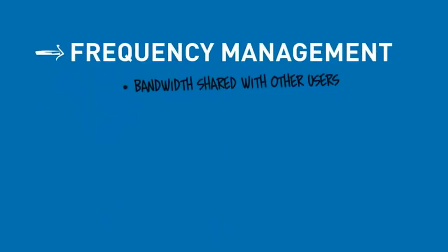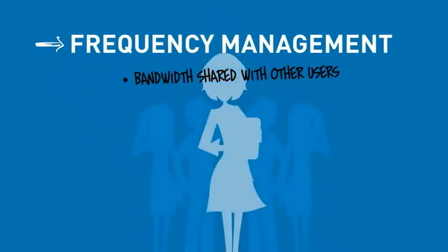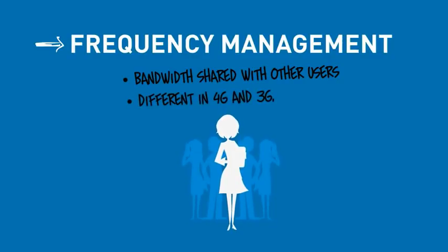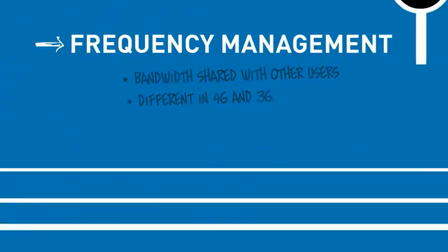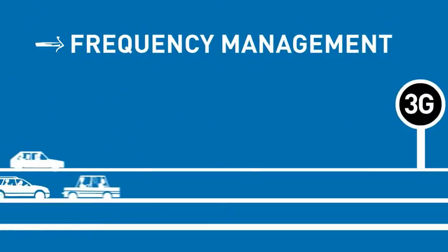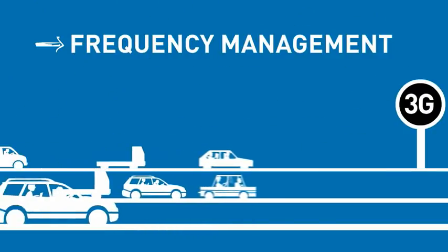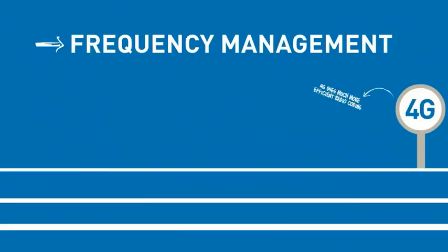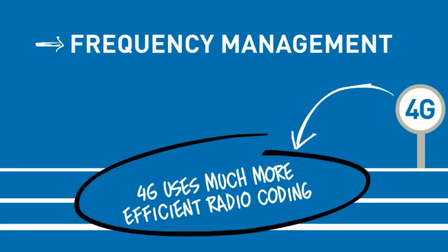First of all, 4G has a different frequency management. You share the available bandwidth with other users, but the way the frequency is shared is different in 4G compared to 3G. In 3G, it's like your speed is regulated and limited.